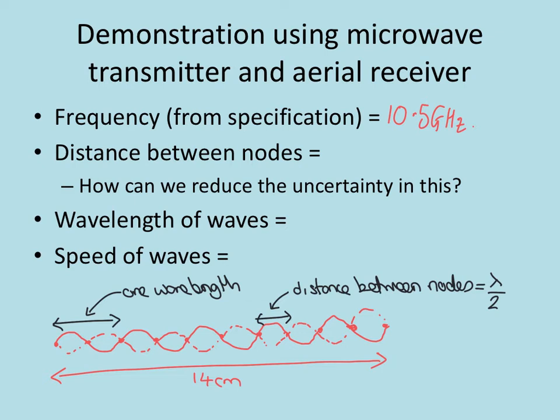Hopefully you have worked out that the wavelength will be a fifth of the distance that I measured because I've got five complete wavelengths because I've got 10 complete gaps from one node to the next which would give me one wavelength is 2.8 centimeters which I'll need to change into meters as 0.028 meters.